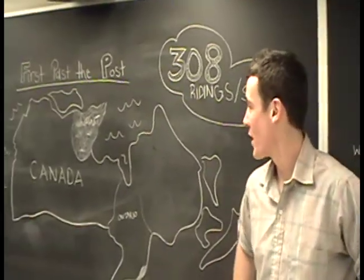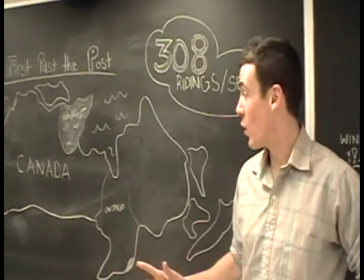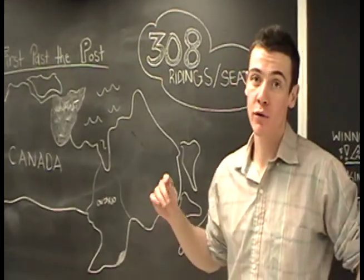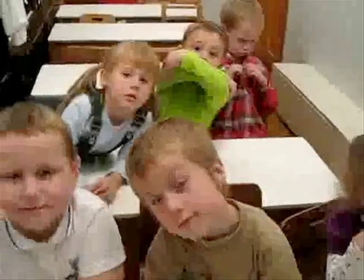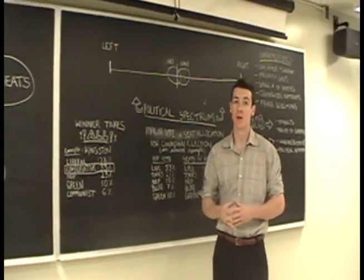On election day, every Canadian citizen over the age of 18 votes for one representative that is running for election in their particular district. So, one of the 308. The important thing to remember about the first-past-the-post electoral system is that it's a winner-take-all system.